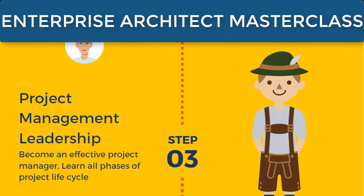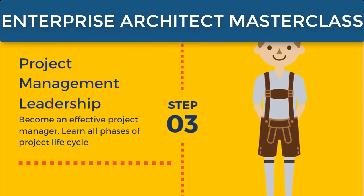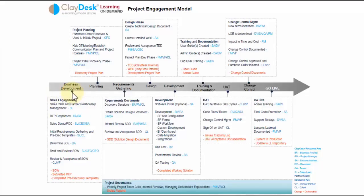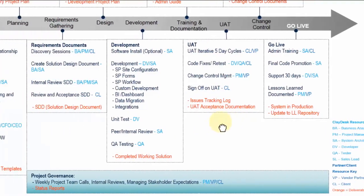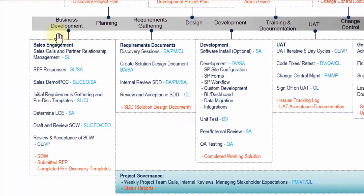Step three is the big one: project management. You need to be an effective project manager and understand the entire project life cycle — what happens at phase one, when requirements are gathered, when you talk to a business analyst, when you're talking to the developer team, the solutions architect team, and so forth. You must have a solid understanding and know-how of how to become an effective project manager, and you will master this within this course.